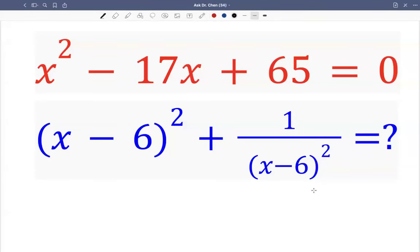Let's see this question. We are given this quadratic equation x squared minus 17x plus 65 equals 0. We are asked to find x minus 6 squared plus 1 over x minus 6 squared.